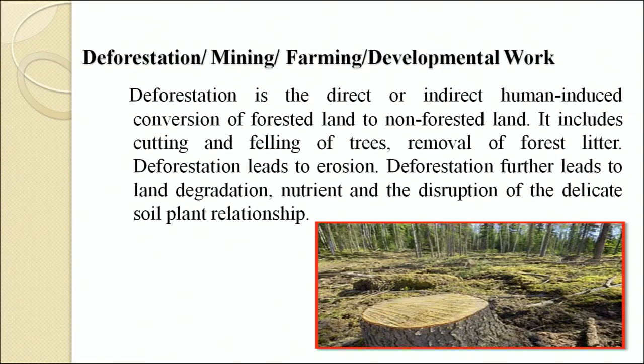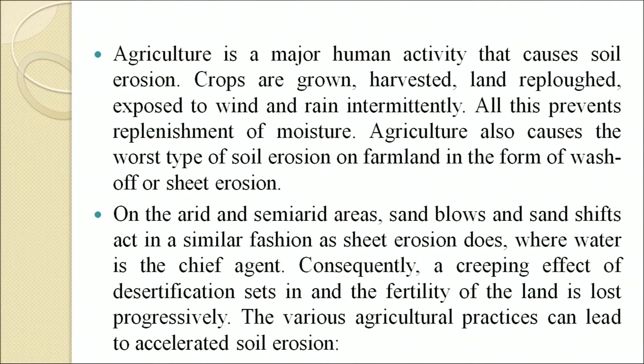Deforestation is the direct or indirect human-induced conversion of forested land to non-forested land. It includes cutting and felling of trees and removal of forest litter. Deforestation leads to erosion, land degradation, nutrient loss and disruption of the delicate soil-plant relationship. Agriculture is a major human activity that causes soil erosion: crops are grown, harvested, land re-plowed and exposed to wind and rain intermittently.